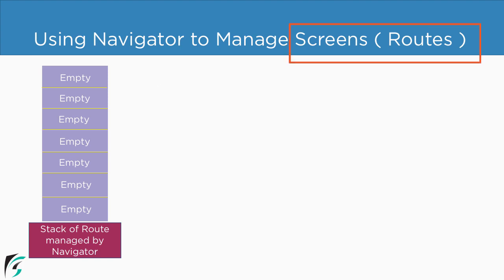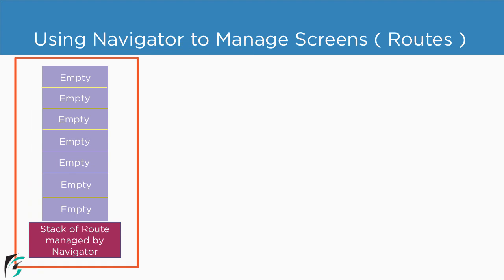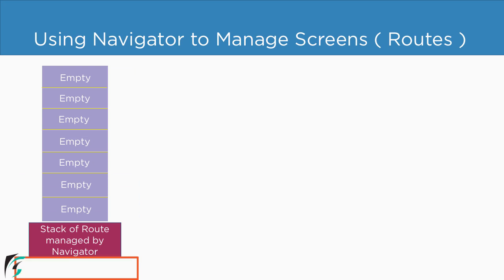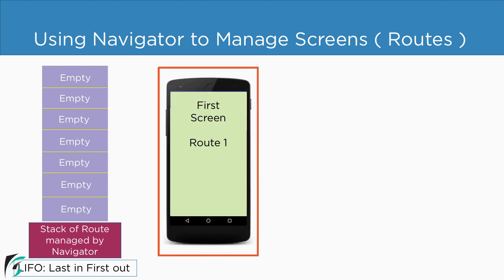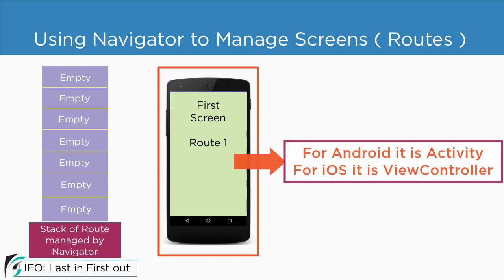In Flutter, one screen is known as one route. So if I use the term route, I'm talking about one single screen. On the left you can see a stack where our routes — that is, the screens — will be stacked. We all know that the stack follows last in first out, meaning the element that enters a stack last comes out first. In Android this route is known as an activity, and in iOS it is known as a view controller.